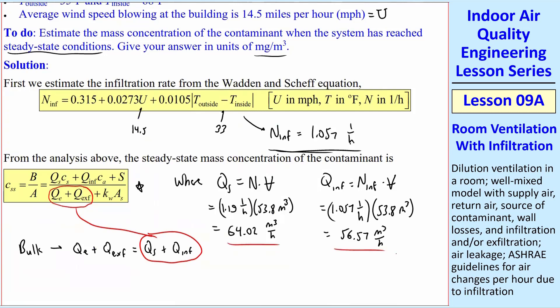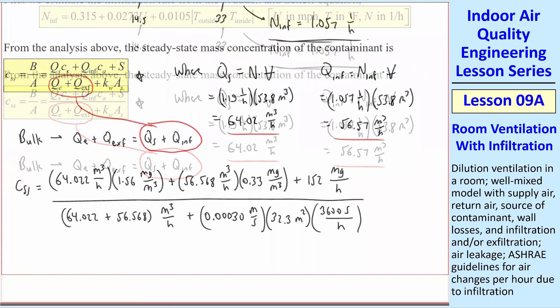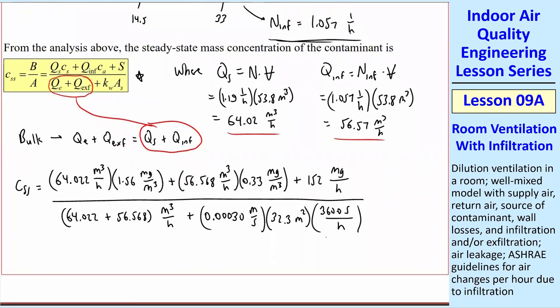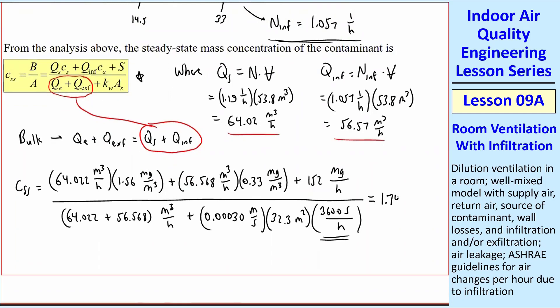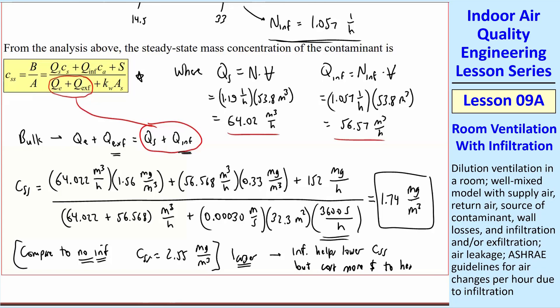So now we're going to plug in everything into that equation to get our final answer. So I threw in all the numbers. The only unit conversion I need is right here, 3600 seconds per hour. And I get 1.74 milligram per meter cubed compared to the case with no infiltration. Let Q_INF equals zero here and Q_EXF equals zero. And I got C_SS is equal to 2.55 milligram per meter cubed, which of course is bigger. Infiltration helps to lower C_SS, but it will cost more dollars to heat in this case.